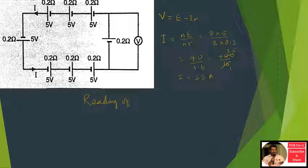The terminal voltage across the voltmeter is equal to E minus Ir, equal to 5 minus current.